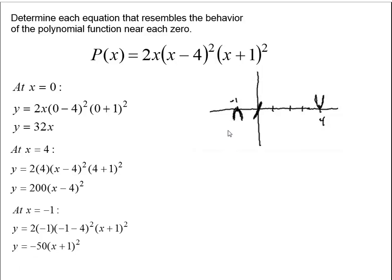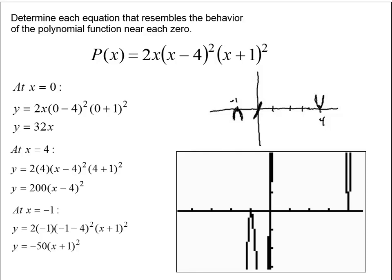Using that information for a rough sketch: at x equals 0, here's a line with slope 32; at x equals 4, a parabola opening up; at x equals negative 1, a parabola opening down. Comparing with the graphing calculator, we can see the bouncing at x equals 4 and x equals negative 1, and the crossing at x equals 0. Desmos does a better job smoothing the curve than the calculator.